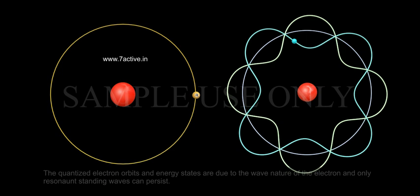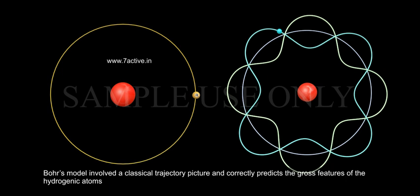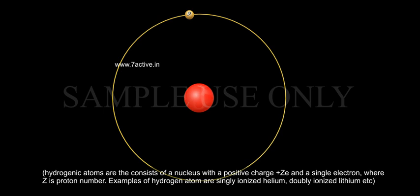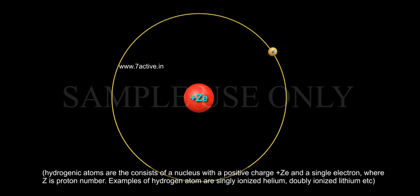And only resonant standing waves can persist. Bohr's model involved a classical trajectory picture and correctly predicts the gross features of the hydrogenic atoms. Hydrogenic atoms consist of a nucleus with a positive charge, positive ZE, and a single electron where Z is proton number.